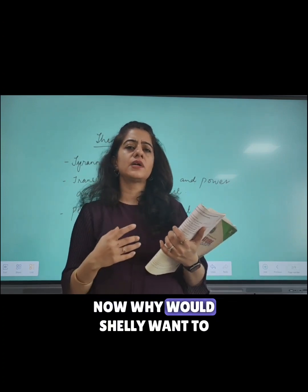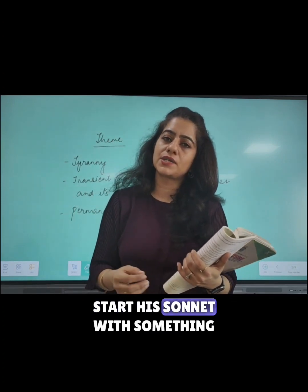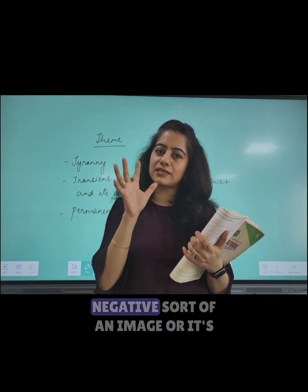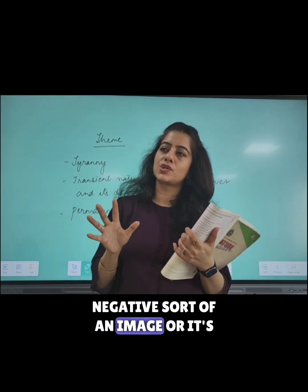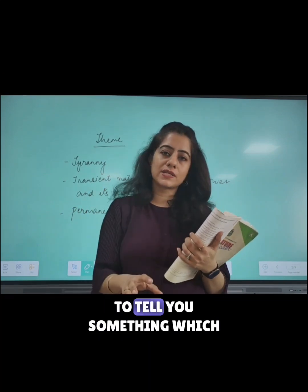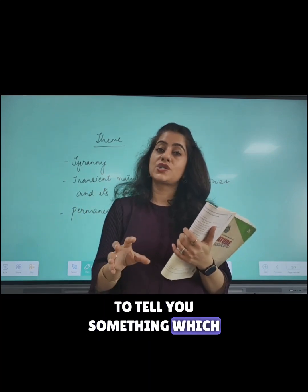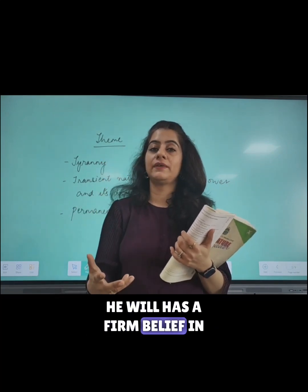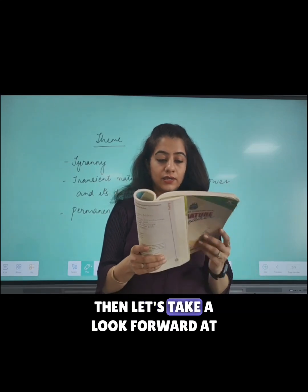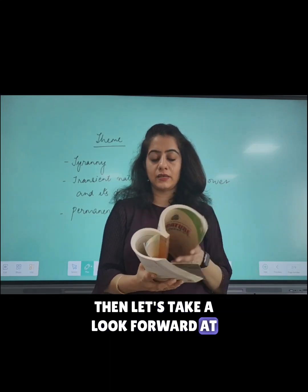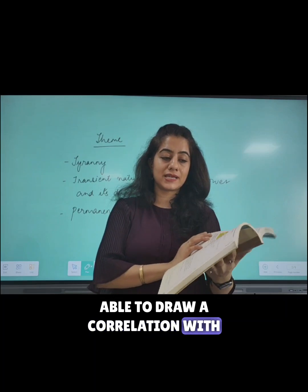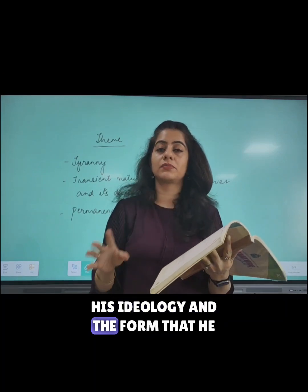It seems that some damage has happened to this statue and it has probably been dilapidated over time, suffering a lot of devastation, which is why it seems to be in a broken position. Why would Shelley want to start his sonnet with something like this? It's probably trying to tell you something he has a firm belief in. Let's look at the poem and draw a correlation with his ideology.